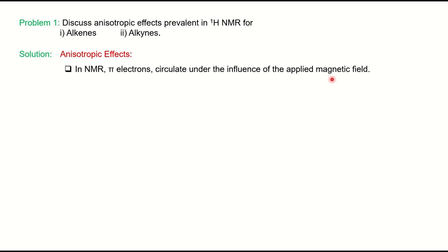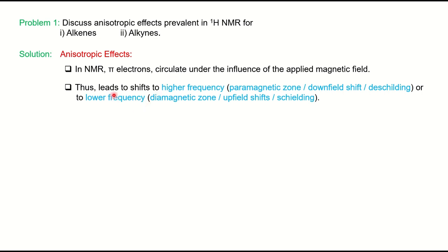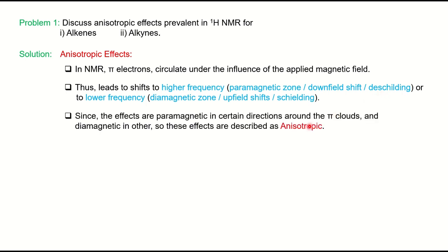You have an organic molecule and you put it in the applied magnetic field. The molecules we consider are those having pi electrons. When you place an organic molecule having pi electrons in the applied magnetic field, the electrons around it start circulating. This leads to higher frequency in the paramagnetic zone — we also call it downfield shift or deshielding — or some protons fall in lower frequency, the diamagnetic zone, also called upfield shift and shielding. These terms are very important: higher chemical shift falls in the paramagnetic zone, meaning downfield shift or deshielding.